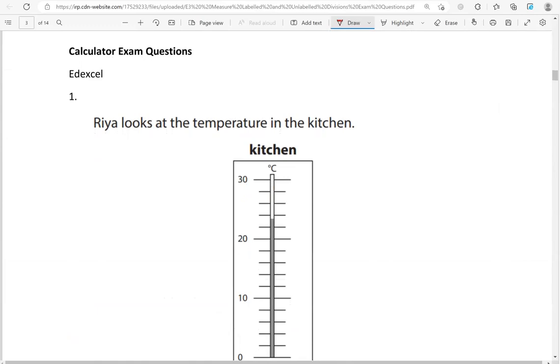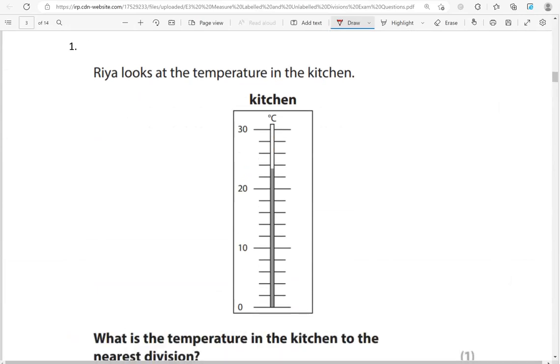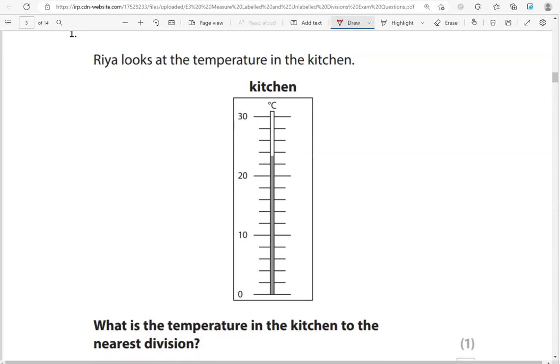Now we're moving to the calculated questions. Ria looks at the temperature in the kitchen. What is the temperature in the kitchen to the nearest division? It doesn't say labeled or unlabeled, so we've just got to find the nearest division. This one here is closer to this division.